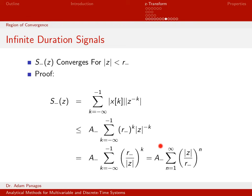This geometric sum converges as long as the magnitude of R minus over the magnitude of Z is less than 1 — meaning the magnitude of Z must be less than R minus. So S minus always converges for magnitude of Z less than R minus, assuming we can find A minus and R minus to begin with.